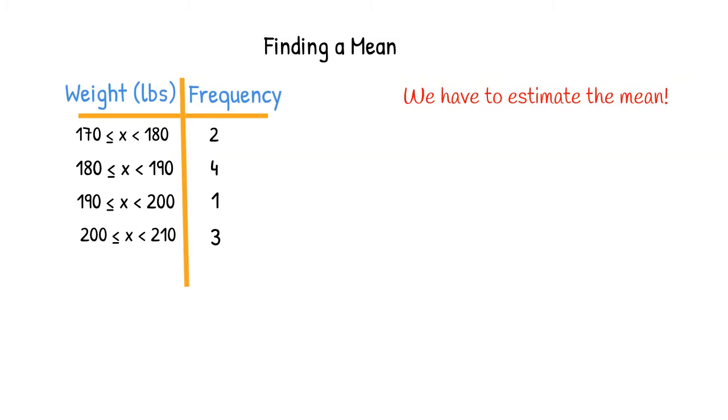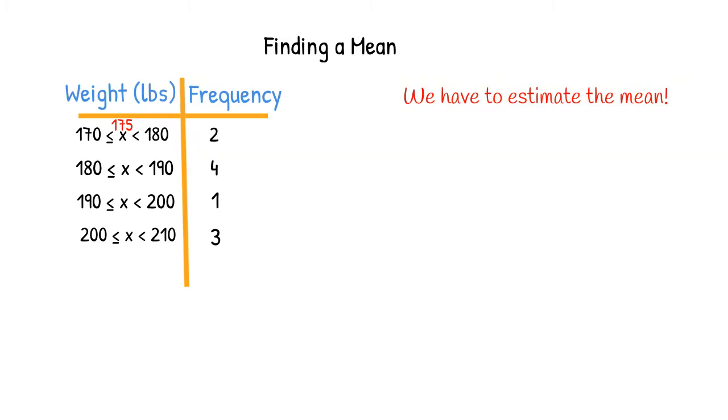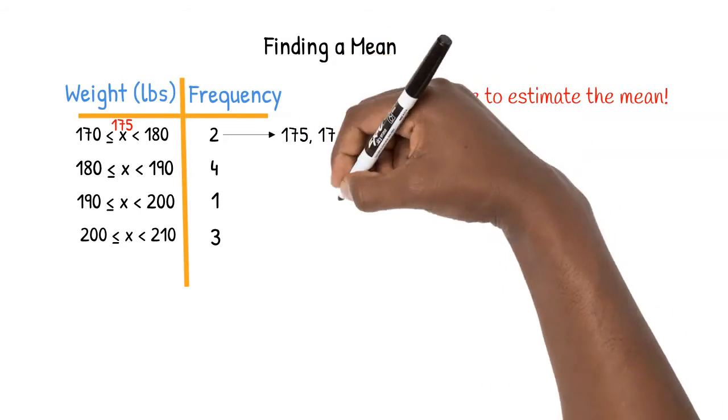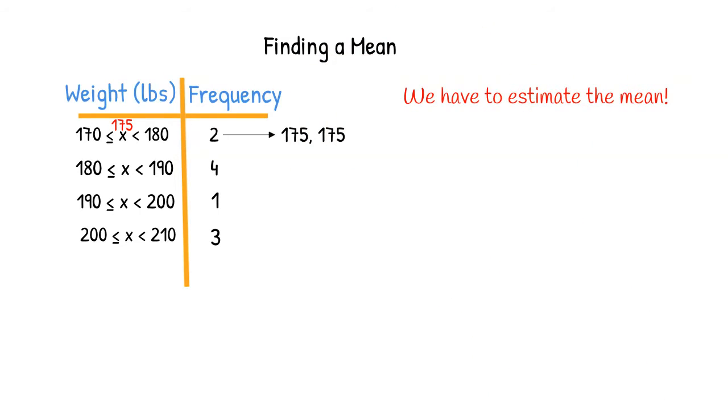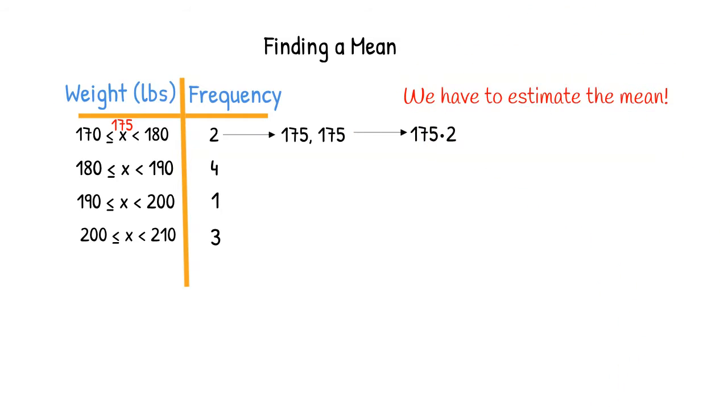Since we don't know the exact weights of the men between 170 and 180 pounds, we use 175 since this number is in the middle of the range. This number is called the mid-interval value. Two people have an estimated weight of 175 pounds. We multiply 175 by two and see that together their weights are approximately 350 pounds.